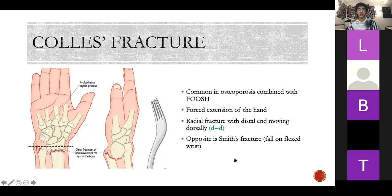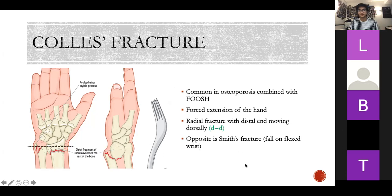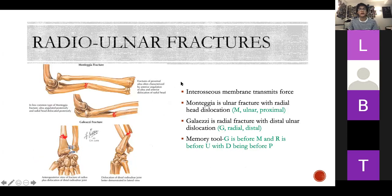Colles' fracture: common in osteoporosis combined with FOOSH — it's forced extension of the hand. There's a fracture of the radius with the distal end moving dorsally — I remember 'D to D' for Colles'. It gives a dinner fork appearance. Smith's fracture is the opposite: fall on a flexed wrist, with the distal end moving anteriorly. Radio-ulnar fractures: the interosseous membrane transmits force between the bones. Monteggia's is an ulnar fracture with radial head dislocation. Galeazzi is a radial fracture with distal ulnar dislocation. Memory tool: G before M, R before U, D before P.